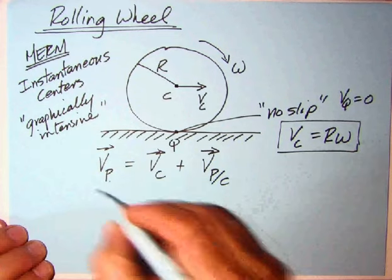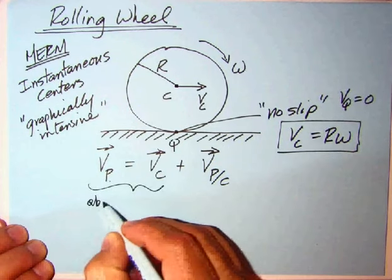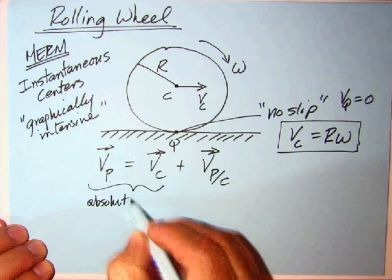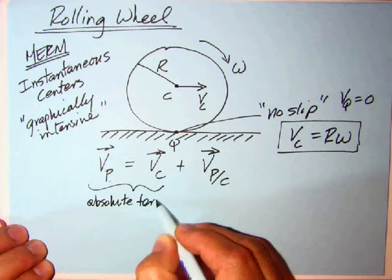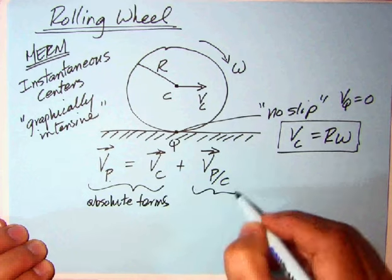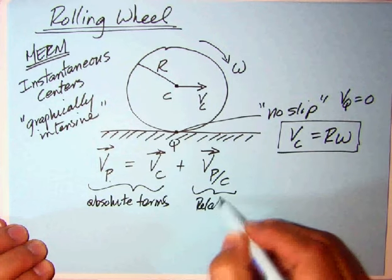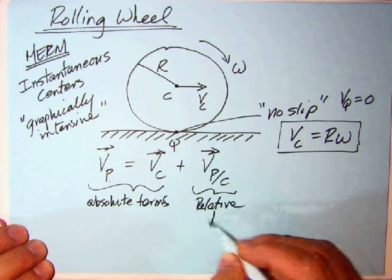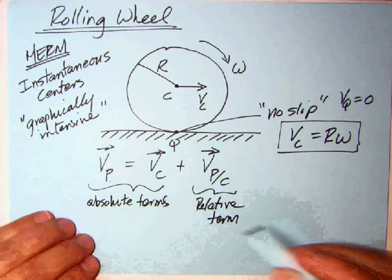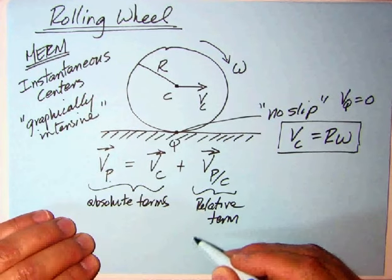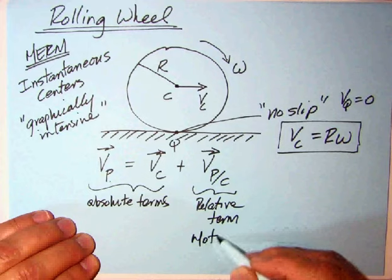Again, remember, these are the absolute terms in the relative motion equation, and this is the relative term. And again, it's motion, essentially motion about a point. Motion in a circle, I think, is what I've referred to as before.